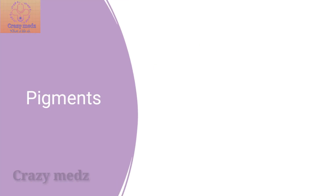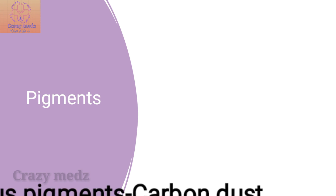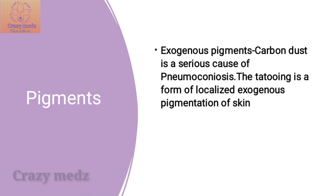Pigments can either be exogenous or endogenous substances. The most common exogenous pigment is carbon dust, which is a serious cause of coal workers' pneumoconiosis. The accumulation of these pigments blackens the tissues of the lung, a condition called anthracosis. Tattooing is a form of localized exogenous pigmentation of the skin.